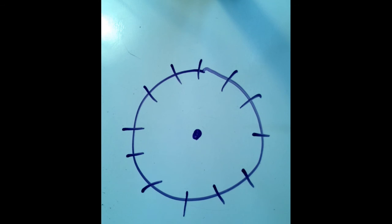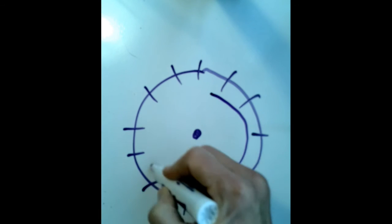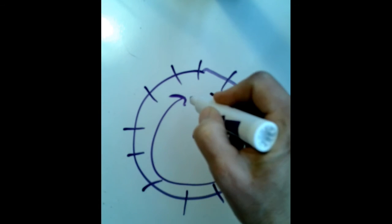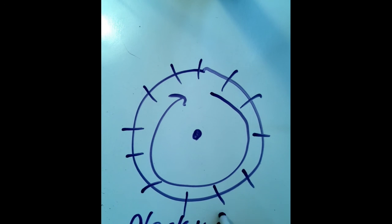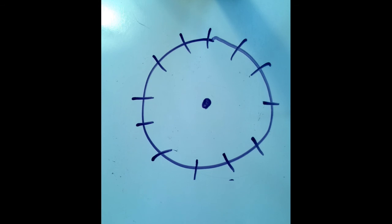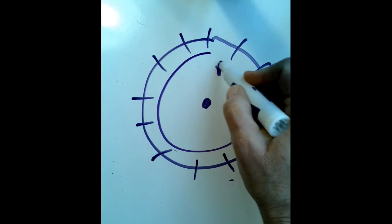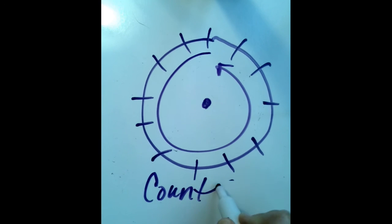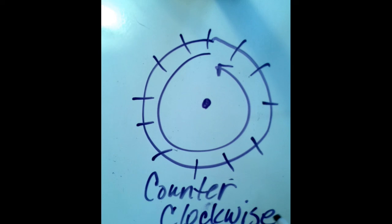One other thing you need to know: when we look at a clock and tell time, the hands move to the right, and down, and around — we call that clockwise. When a motion goes in the opposite direction, to the left and around, we call that counter-clockwise, which is obviously the opposite of clockwise.